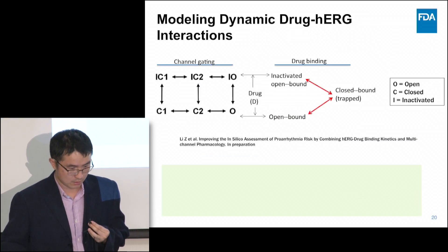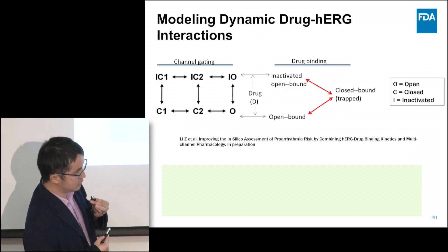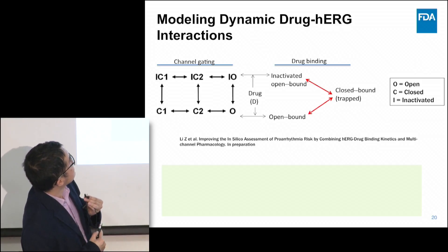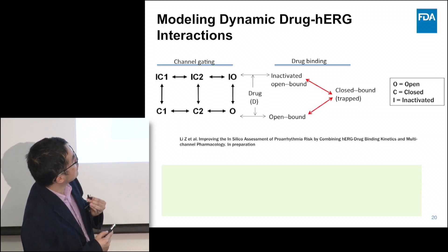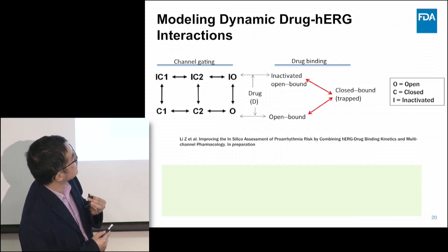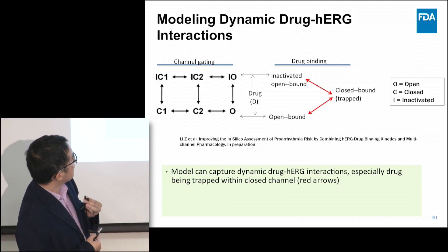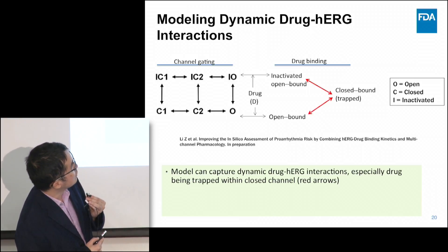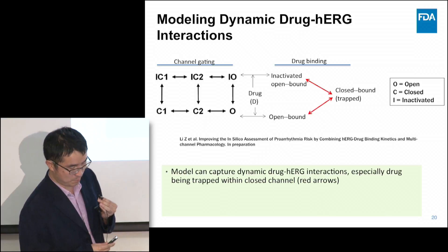We complemented this model with drug binding components. The left part of the model structure is the channel gating component: different states represent different channel protein conformations — C is the closed state, O is the open state, and I is the inactivated state. We added three drug binding states, assuming drugs can bind to either the O or IO state. A key feature is that it can capture dynamic drug-hERG interactions, especially drug being trapped within the closed channel, shown by the red arrows. This feature is overlooked by many published hERG drug binding models.